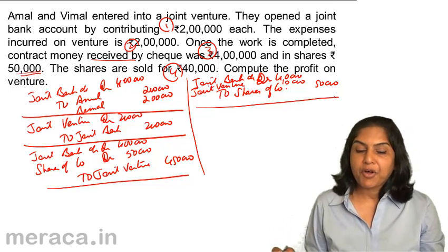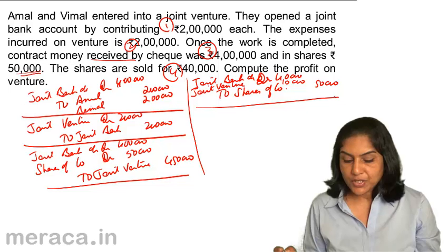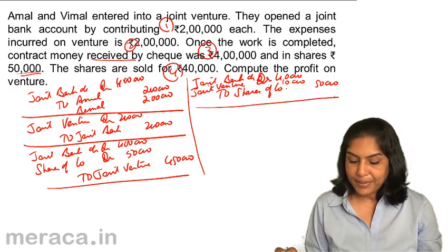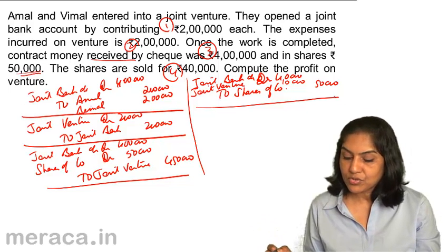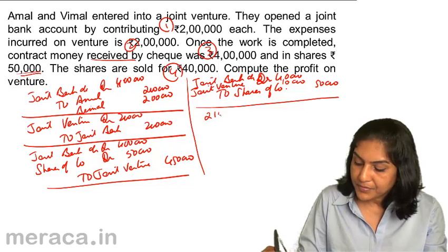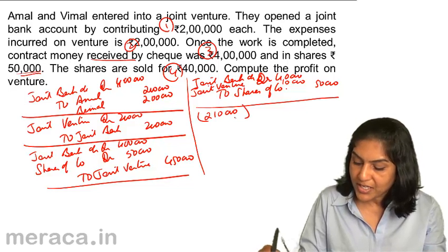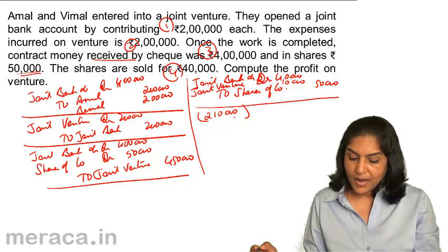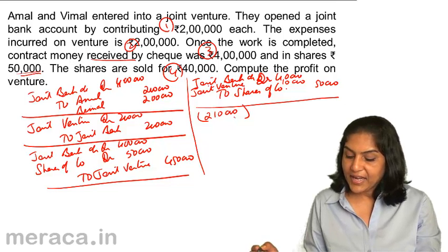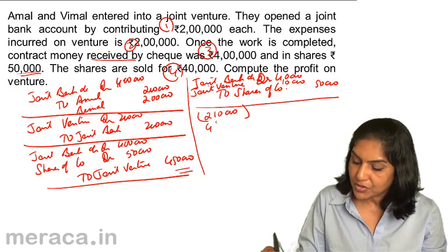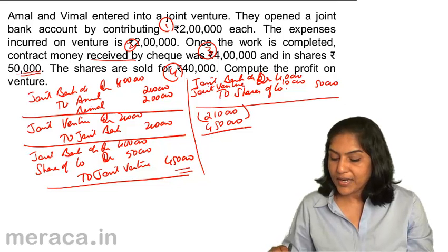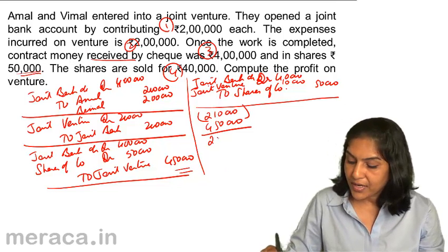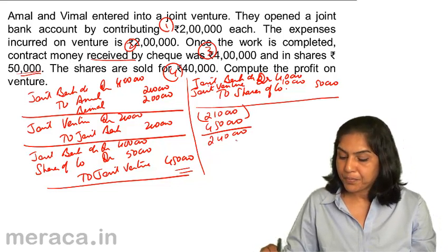Now we get the profit on joint venture. What is the profit? Joint venture has been debited with 2 lakh and also debited with 10,000. So 2 lakh 10,000 is the total expense and loss. And there is income of 4 lakh 50,000. So 4 lakh 50,000 minus 2 lakh 10,000 gives us 2 lakh 40,000 being the profit.